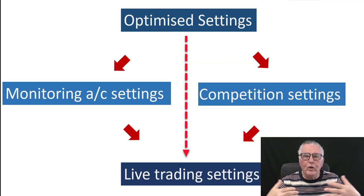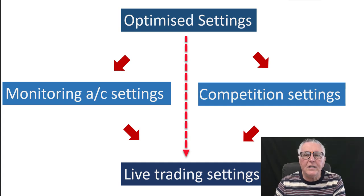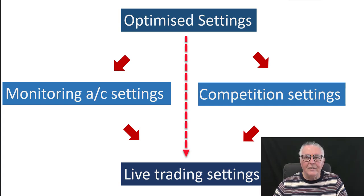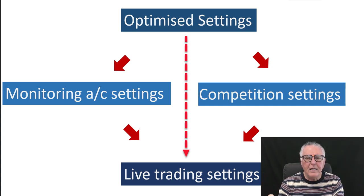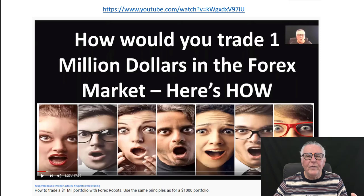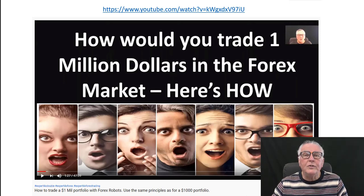Going back to the slide — we've looked at optimized settings, monitoring accounts and competition results, which are actually way superior to the results obtained in the other two. Now we are looking at live accounts. We take the best settings from the competition and monitoring accounts and push them into our live accounts. If you have a look at the recent video I've published, you will see examples of me trading live accounts using substantial amounts of money.